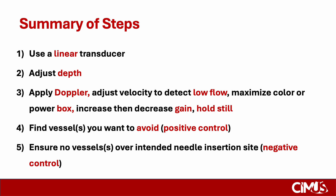Let's review the step-by-step process we just covered. First, using a linear array transducer, adjust the depth to optimize your image in the center of your screen. Apply Doppler. Adjust your velocity to detect low-flow vessels. Maximize the color or power box to capture all of the structures that may contain vessels, and increase gain until there is significant aliasing, then dial it down to still pick up flow while reducing the surrounding aliasing. Hold still to prevent movement artifact. These steps will be performed in two sequences: first by finding vessels you want to avoid with positive control, and then over the site you intend to insert your needle to confirm the absence of vessels with negative control. Once you have performed these steps, you are ready to perform your procedure.